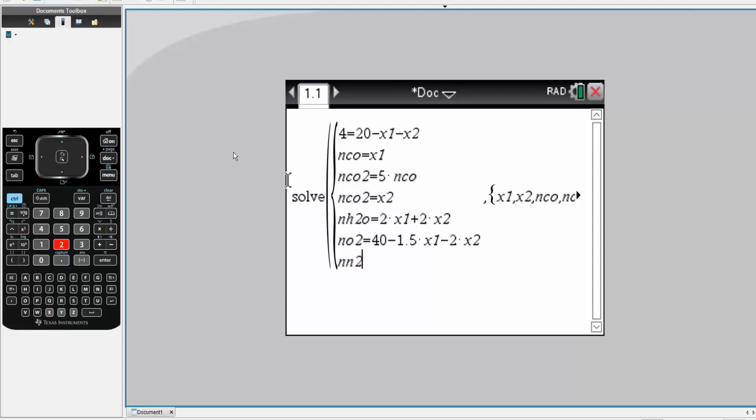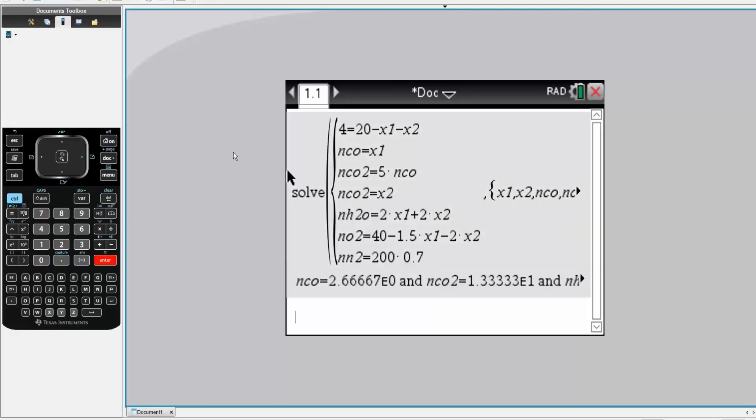Finally, nitrogen, which was the inert, is equal to 200 times 0.7. We hit enter, and we get these answers.